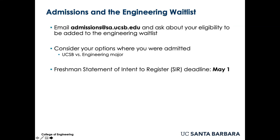If you've recently been admitted to a major at UCSB that was not your first choice, you may contact the Office of Admissions and ask about your eligibility to be added to a waitlist for your first choice engineering major. Not all applicants will be added to the waitlist, and any questions about the waitlist should be directed to the Office of Admissions. Admission from the waitlist is not guaranteed, and it is likely you will need to submit your statement of intent to register before you find out if you were admitted to an engineering major or not.